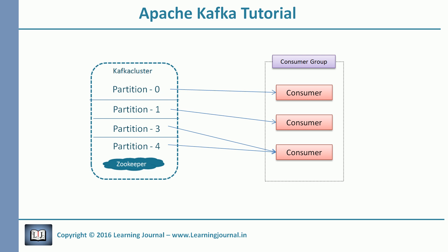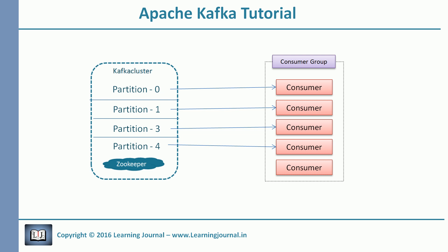The number of partitions on a topic is the upper limit of consumers you can have in a group. So in our example, if you have more than four consumers, one of them reads nothing. Kafka won't complain that you have four partitions but are starting five consumers — simply the fifth consumer will have nothing to read. So far so good: I have four partitions and four consumer processes, all reading in parallel and no one is reading each other's data, so no duplicate reads.